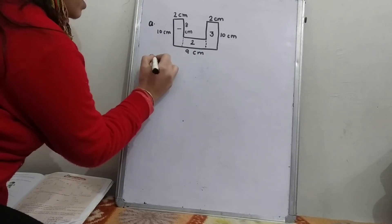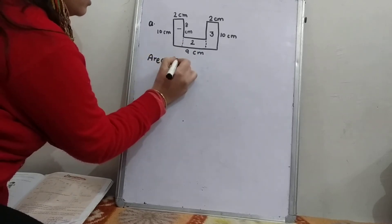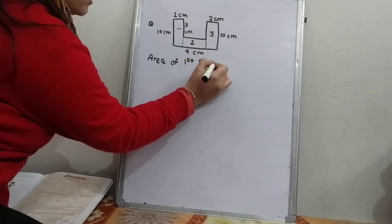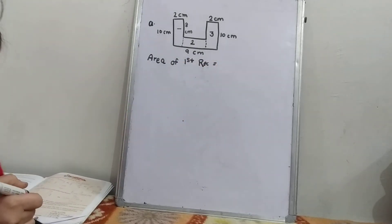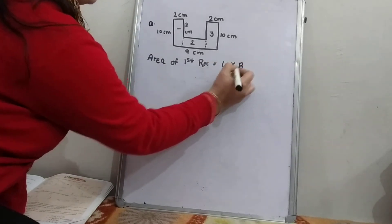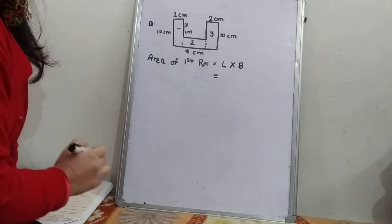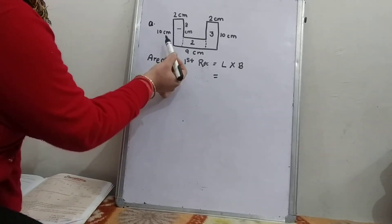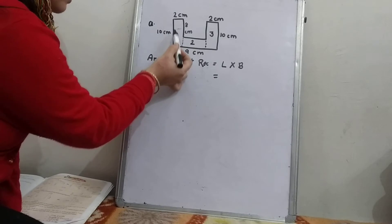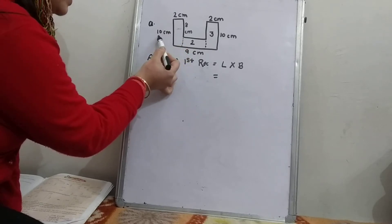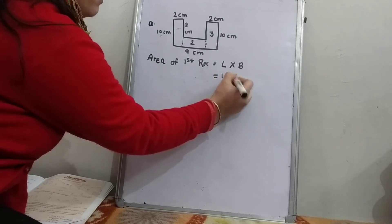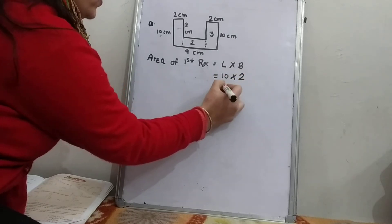So first, area of first rectangle. The area of a rectangle is length multiplied by breadth. Length is the longest side. If I see the first rectangle, this big line is the length. So 10 is the length and 2 is the breadth. So 10 multiplied by 2, it will be 20 cm².